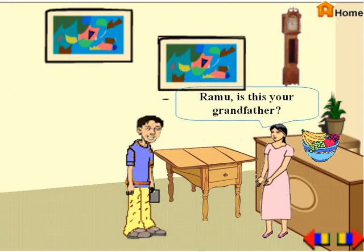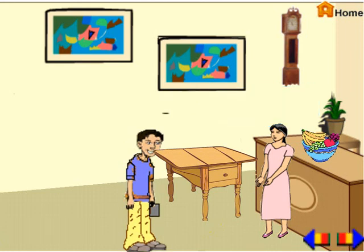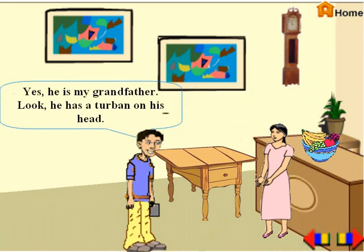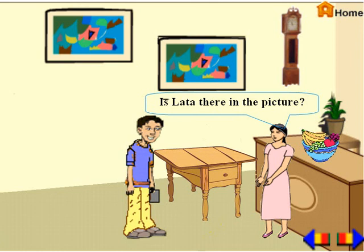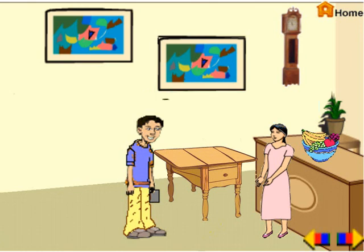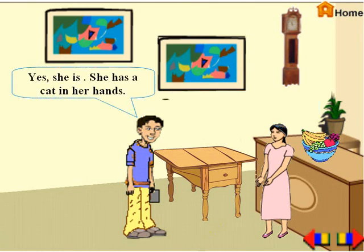They are my grandparents. Ramu, is this your grandfather? Yes, he is my grandfather. Look, he has a turban on his head. Is Lata there in the picture? Yes, she is. She has a cat in her hand.